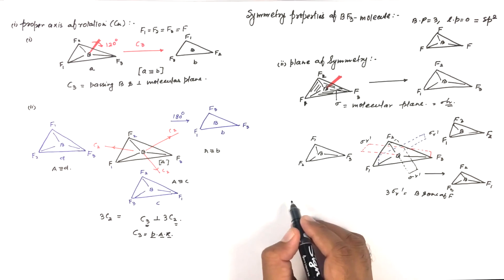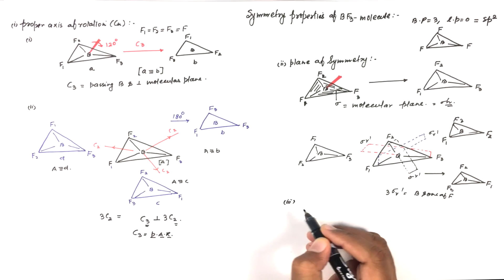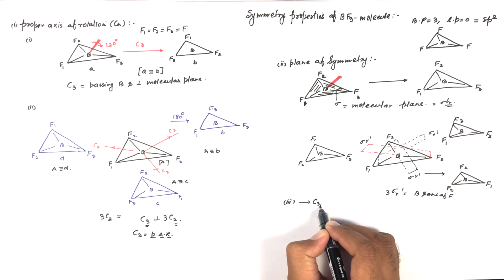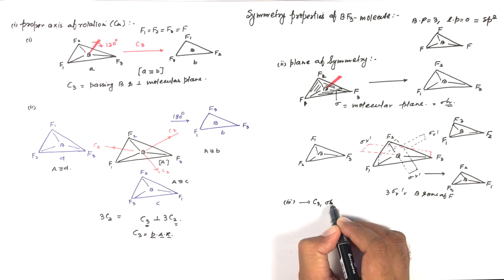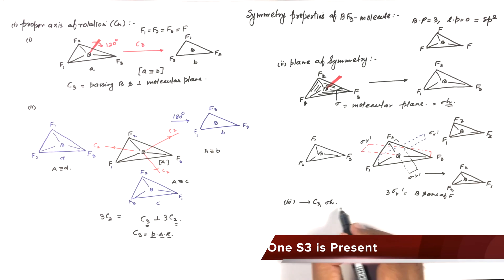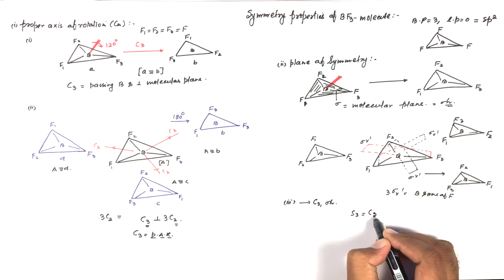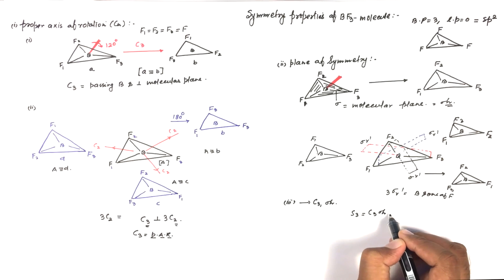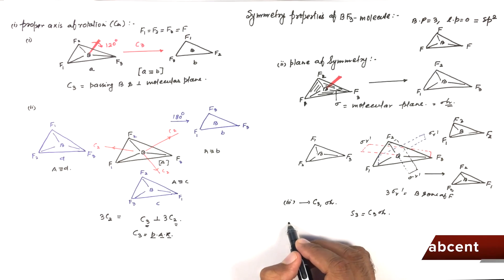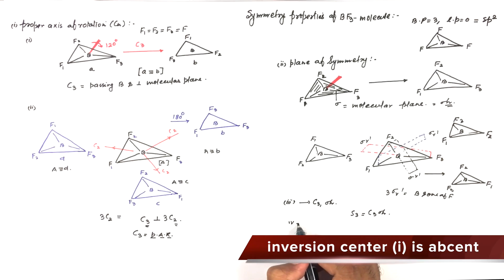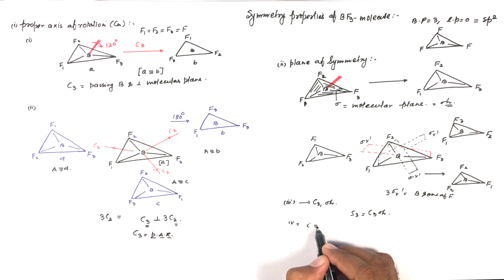Third, the improper axis of rotation: since this molecule has one C3 and one sigma h, it also has one S3 improper axis, which equals C3 times sigma h. Fourth, the inversion center is not present in this molecule.